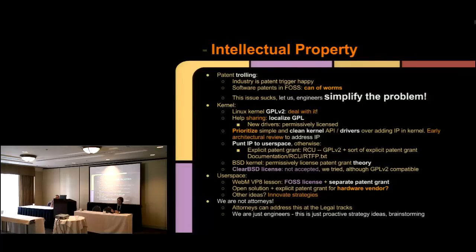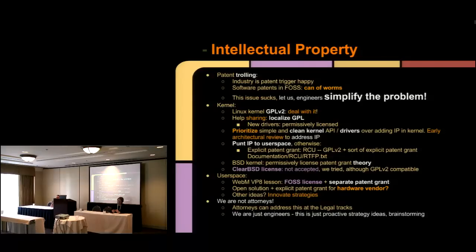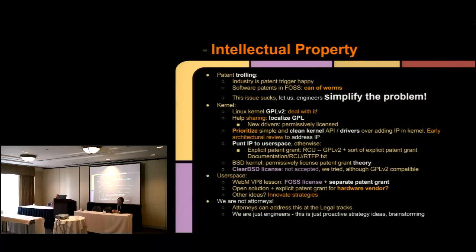We should prioritize clean kernel APIs and do early review of architecture when doing development. During that early development and architecture design, we should try to move intellectual property to user space — let's simplify this problem. If you are going to deal with intellectual property in the Linux kernel, there's one example: the explicit patent grant under the RCU mechanism that IBM provides — there's documentation under documentation/RCU, or RTFP, which stands for 'Read the Effing Papers.' There's also the clear BSD license, which removes any implicit patent grants, but a patch submitted to the Linux kernel using it never got accepted. So I don't see any other option but to try to simplify the problem by moving patents to user space — not advocating for patents in user space, but advocating that this problem can be dealt with a lot easier in user space, and attorneys need to work on this.